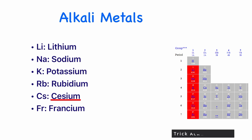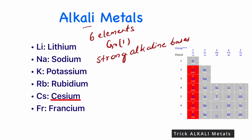In this video we will learn a trick to remember alkali metals. Alkali metals are the six elements in group one of the periodic table. They are called alkali metals because they react with water to form strong alkaline bases. The oxides and hydroxides of these alkali metals form strong alkaline bases which are capable of neutralizing acids.